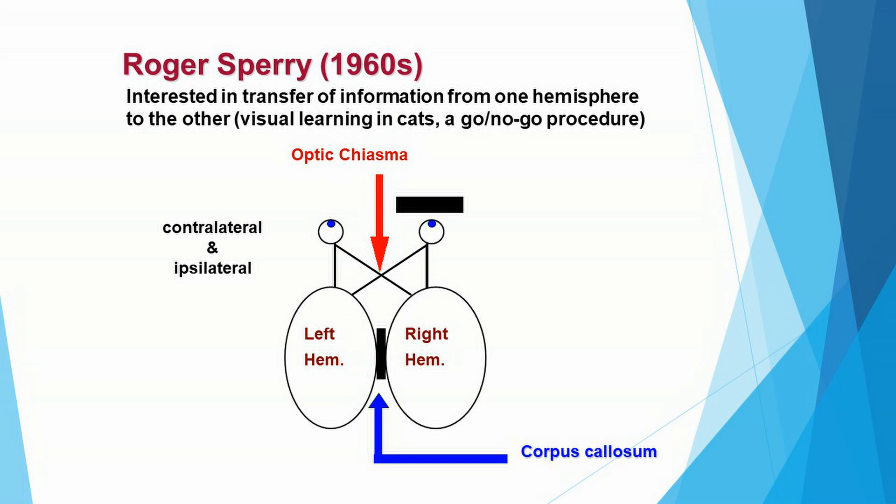This involves two vocabulary terms: contralateral and ipsilateral. You're already familiar with the idea that contralateral connections are across the body. Ipsilateral connections are those that are on the same side. So contralateral connections between the eye and the brain: left eye to the right hemisphere, right eye to the left hemisphere. Ipsilateral connections: left eye straight back to the left hemisphere, and right eye straight back to the right hemisphere.